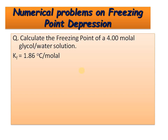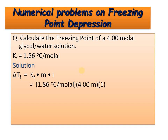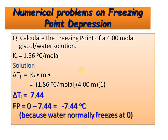Next is depression of freezing point. The molality is already given from the previous question. Using the formula ΔTf = Kf·m·i, we calculate ΔTf. The freezing point comes out to be 0 minus 7.44°C. Earlier water was freezing at 0°C, and now it freezes at −7.44°C. Therefore it acts as an antifreeze.